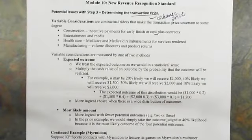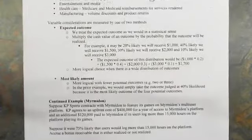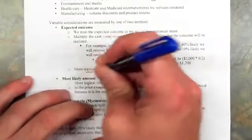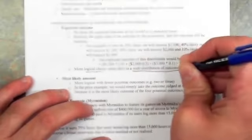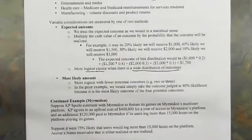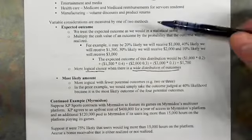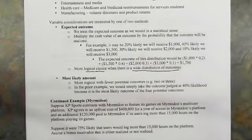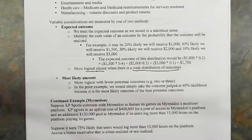So how do we account for variable consideration? Two methods are put forth by the new standard. One is called the expected outcome method; the other is the most likely amount. The expected outcome method is the logical choice when we have a wide distribution of outcomes — say four or five potential outcomes — because it more appropriately weighs our potential expected values. We treat it in a statistical sense, which means we multiply each outcome's cash amount by the probability of realizing it.